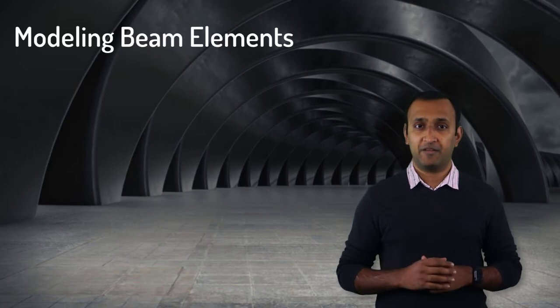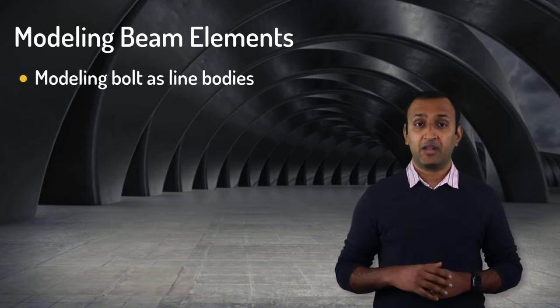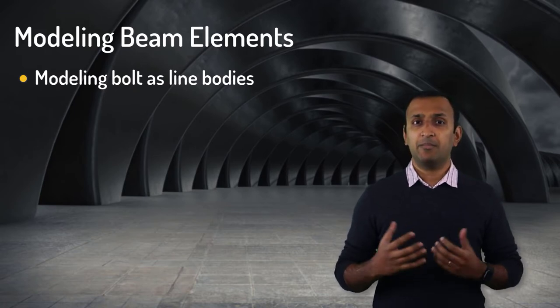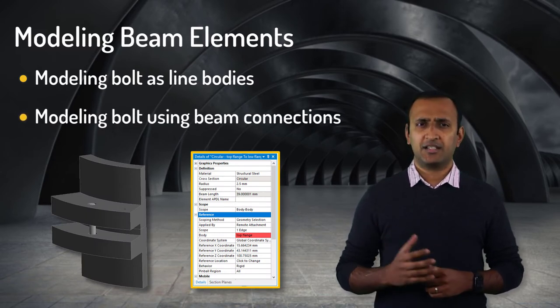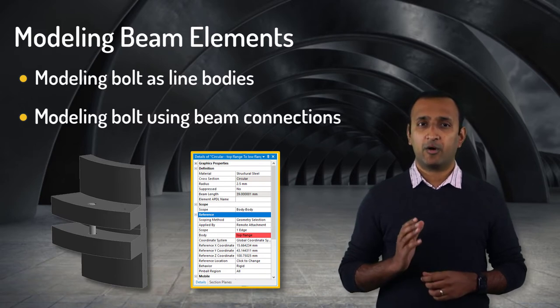If we decide to use beam element representation, then we are presented with two more options. The first being modeling the bolt as a line body in the CAD file and the second option is to skip this step during geometry preparation stage and simply use a beam connection in ANSYS Mechanical. This is identical to using a line body, but it involves very little preprocessing effort.